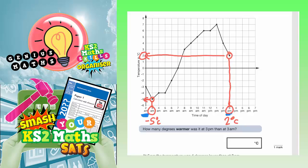So now we think about this part of the question. How many degrees warmer was it? So how many degrees warmer was it from minus 5 to 2? Well, obviously between minus 5 and 2, if you imagine the number line, you've got a 0.